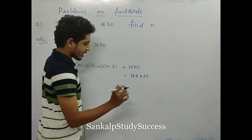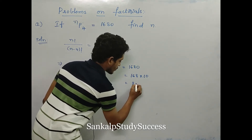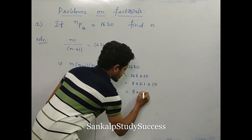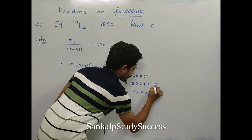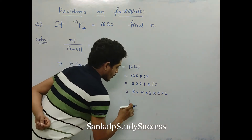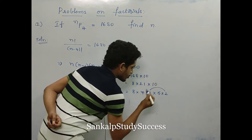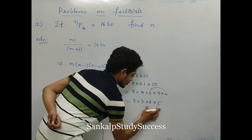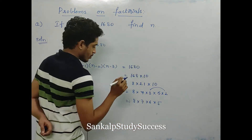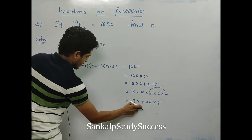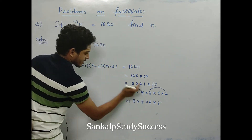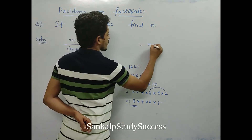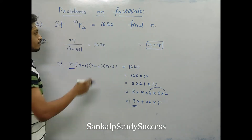We can write 1680 as 8 into 21 is 168, then 8 into 7 equals 56... So 8 into 7 into 6 into 5: four consecutive numbers decreasing by 1. So n equals 8, n minus 1 equals 7, n minus 2 equals 6, n minus 3 equals 5. Therefore the value of n is 8.